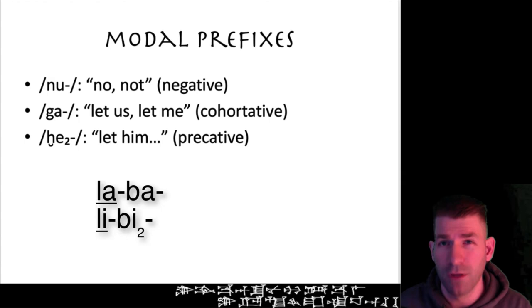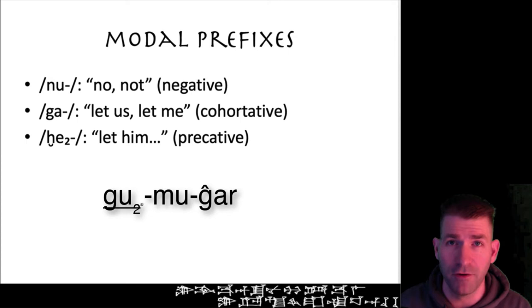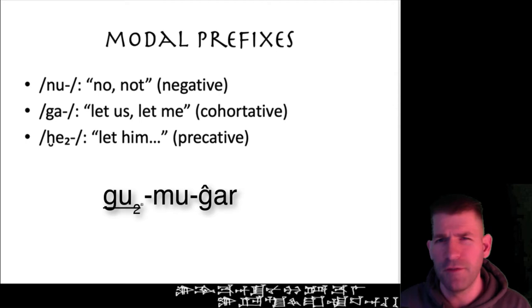When you see the modal prefix ga, begin by translating it 'let me' or 'let us' if plural. So if you see ga-mu-gar, you would translate 'let me set.' As with the prefix nu, ga can sometimes change its shape depending on what follows. The form ga-mu-gar could also appear ga-mu-gar, where the a vowel is covered by the u of the mu prefix.